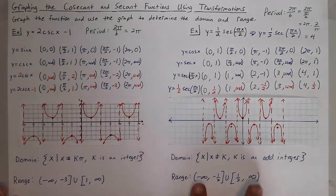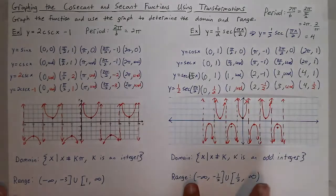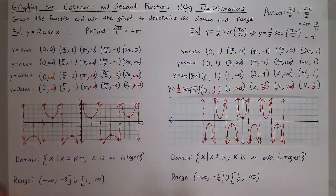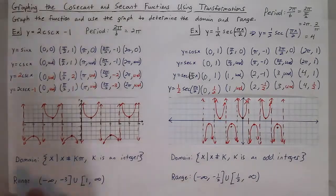You also see that we don't put a bracket on infinity because you cannot include infinity as a number. And that is how you graph the cosecant and secant functions using transformations.